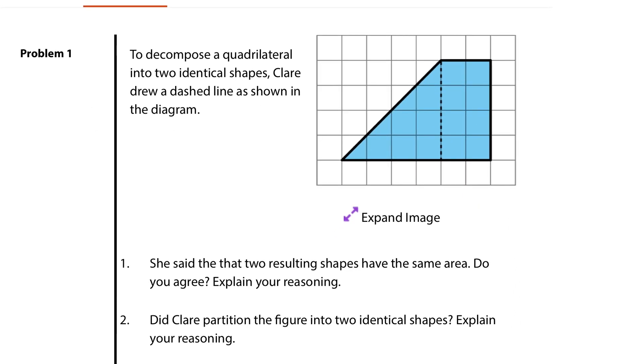As we look at problem 1, to decompose a quadrilateral into two identical shapes, Claire drew a dashed line as shown in the diagram. She said that the two resulting shapes have the same area. Do you agree and explain your reasoning? Well, this rectangle on the right certainly has an area of 8. You can either count the squares or do 2 times 4 to get 8.